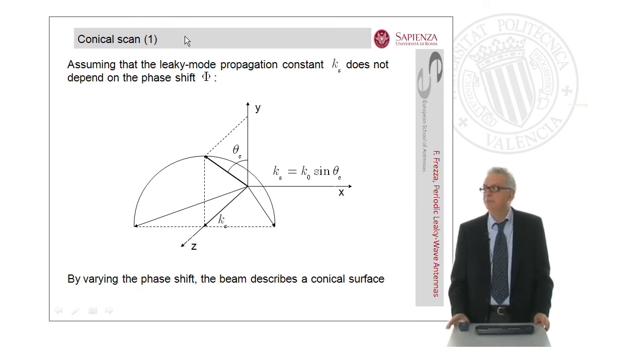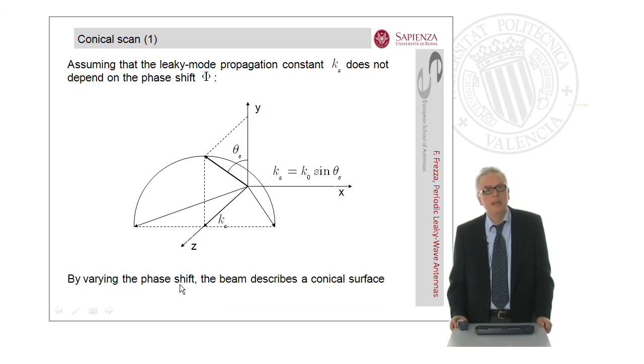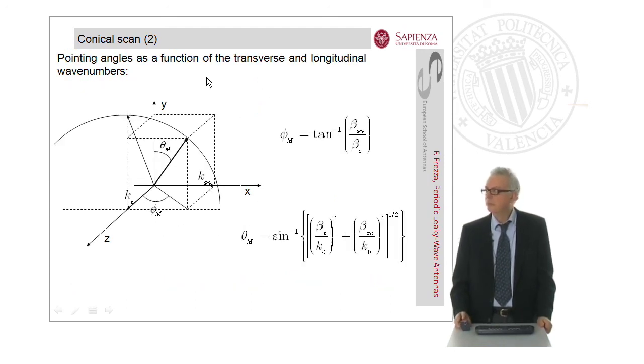The conical scan. Assuming that the leaky mode propagation constant K_z does not depend on the phase shift imposed phi, we see that by varying the phase shift, that is performing a scan in the azimuth plane, the radiated pencil beam describes a conical surface around the z-axis, as we can see here. Useful for the design are the expressions of the pointing angles as a function of the transverse and longitudinal wave numbers. This is the expression for the azimuth angle with respect to the z-axis, and this is the formula for the elevation angle of this radiated beam.